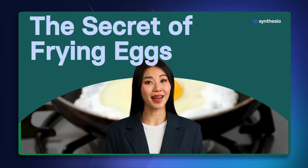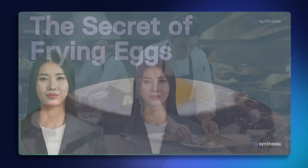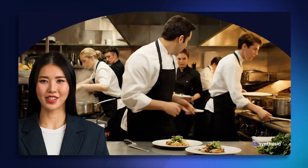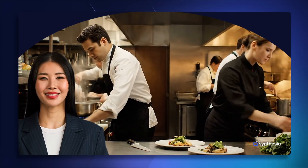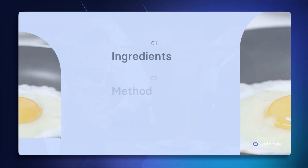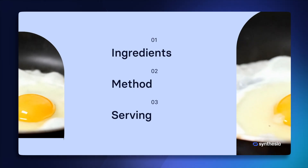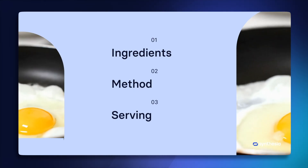My final product looks like this: 'Ever wanted to fry an egg like the pros? You're about to learn the secret methods of Michelin star chefs in just three simple steps. We'll cover the best place to source your eggs, the best method for frying, and how to serve it up like Gordon Ramsay.' If you want to learn how to replace those stock avatars with an AI clone of yourself, you need to watch the video on screen right now where I go through the entire process of making a personal avatar.